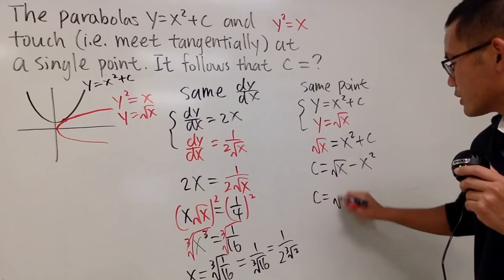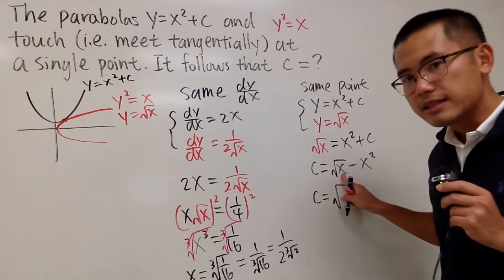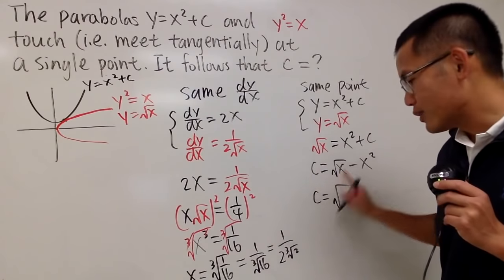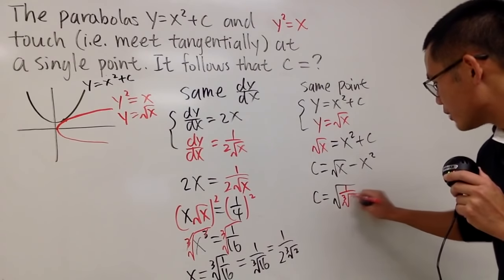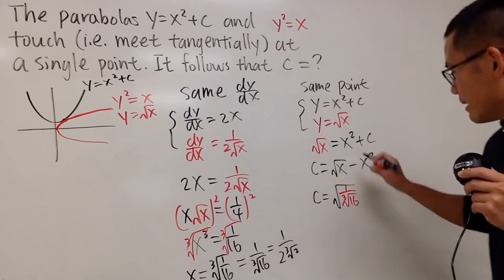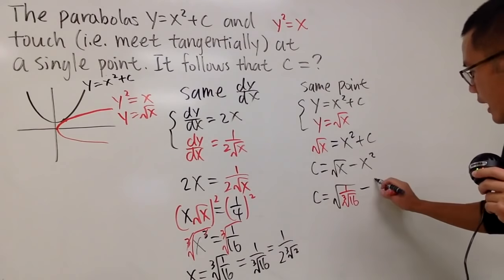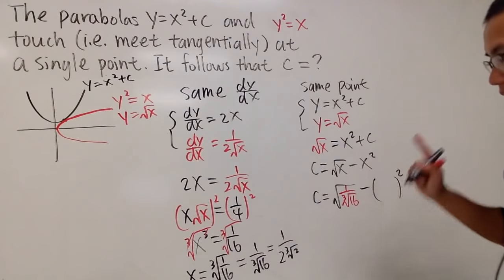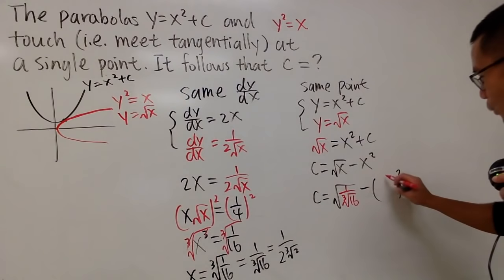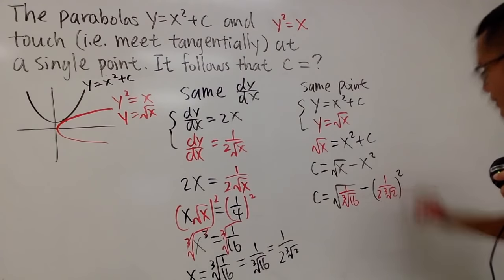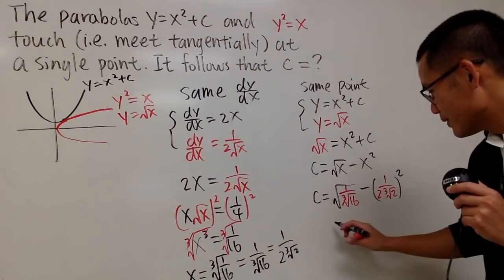c equals square root. For this x in the square root, I will use this version. So, I will put down 1 over the cube root of 16. And then minus x squared, I will open the parentheses and square that. And I will actually use this version when I square. So, we have the 1 over 2, cube root of 2, like this. And now, have a look.